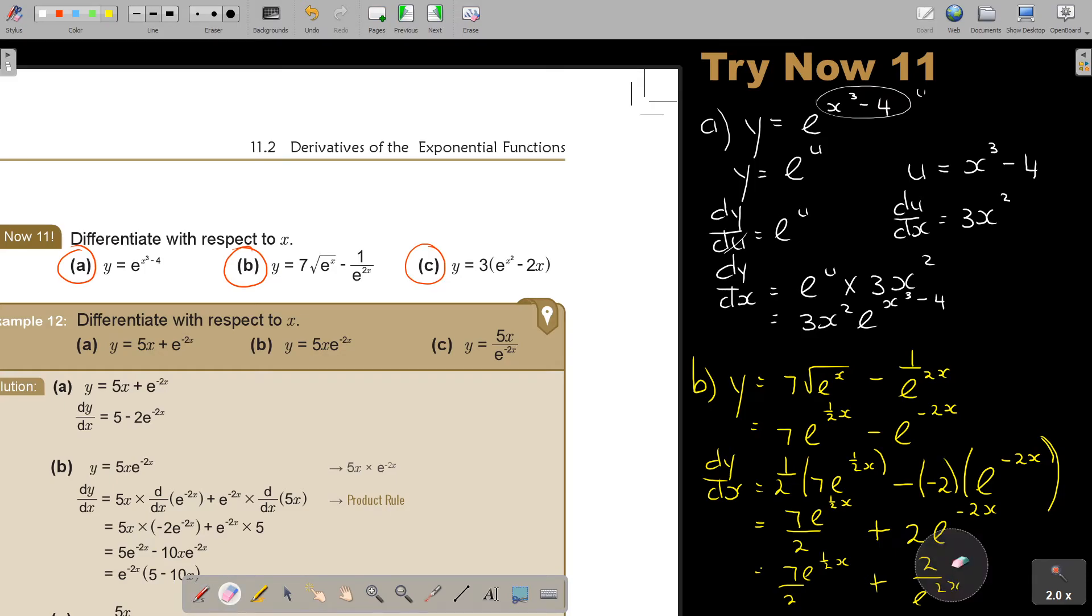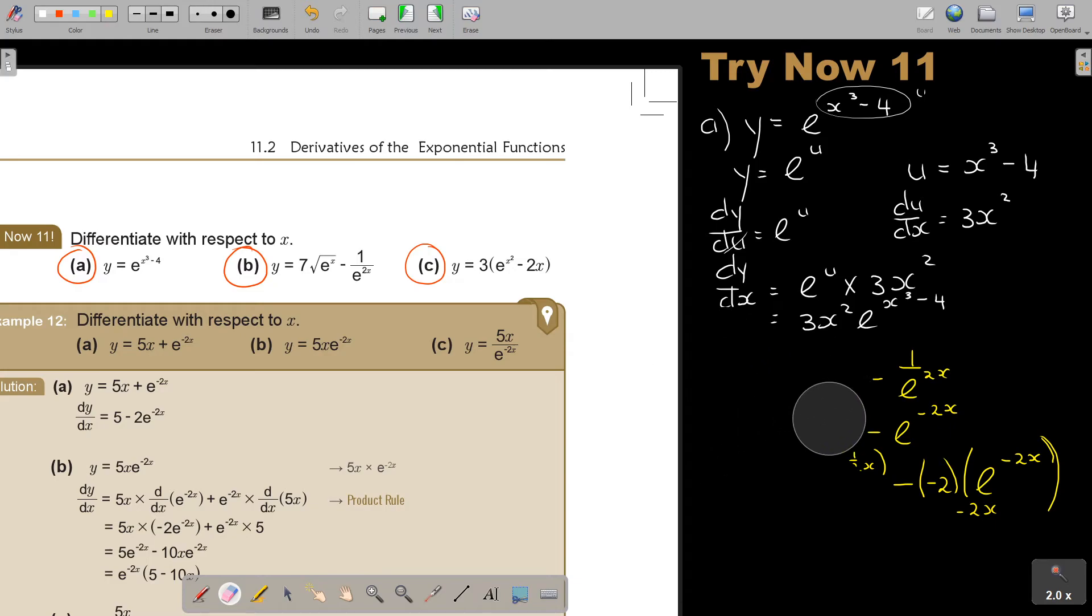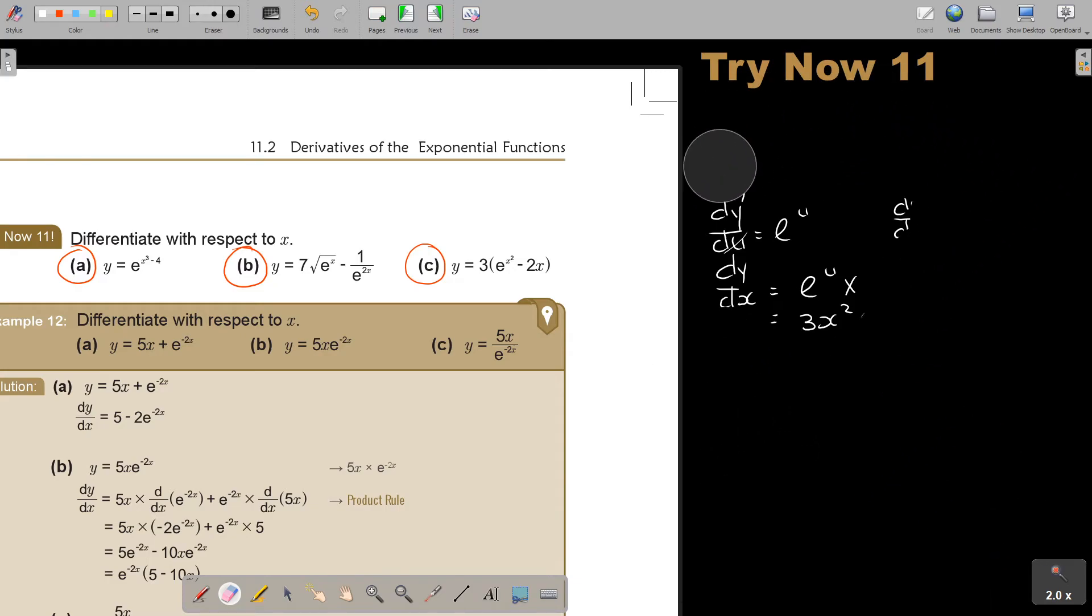Let's do the last one. This is number c. So this is y is equal to 3. And again, there's the 2. But first, let's just multiply this out. So it's 3e^(x^2 minus 6x). So if you differentiate, now don't forget that this one is the chain rule. This one is just normal differentiation.